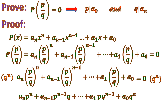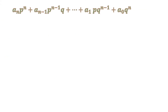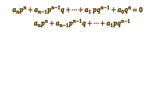After distributing qⁿ, the expression becomes: aₙpⁿ + aₙ₋₁pⁿ⁻¹q + … + a₀qⁿ = 0. For each term, the powers of q in the denominator cancel with those from the multiplied qⁿ, leaving one fewer q each time. The right side remains 0. We then transpose a₀qⁿ to the other side, making it −a₀qⁿ.